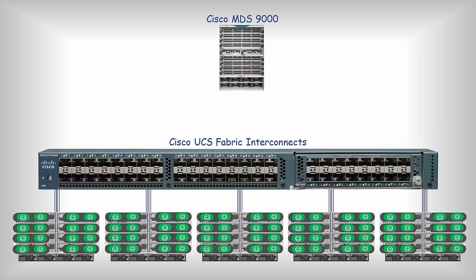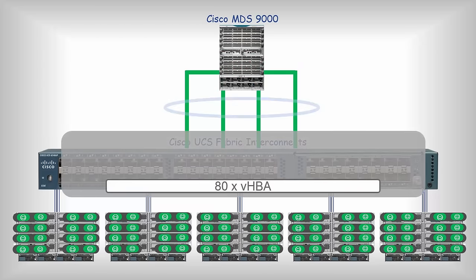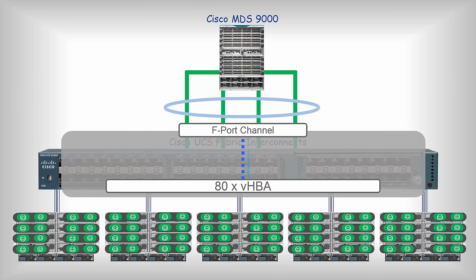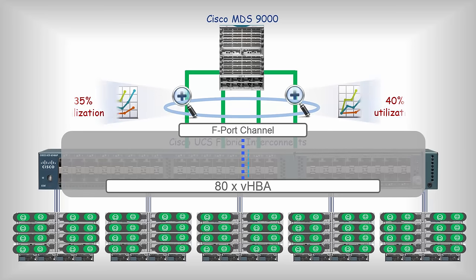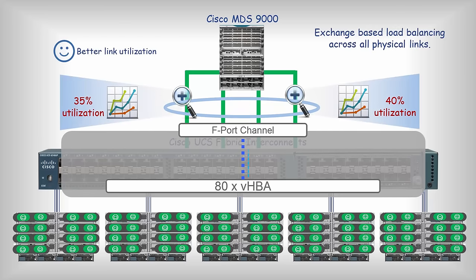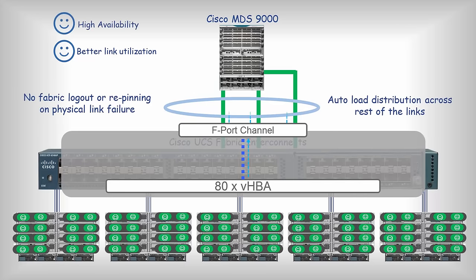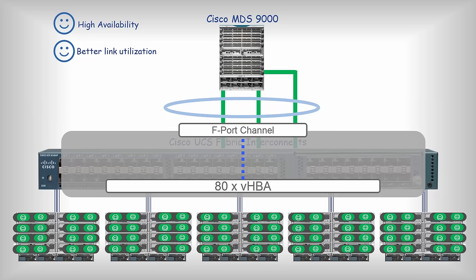With Cisco MDS switches, SAN uplinks from UCS Fabric Interconnects running in end-host mode can be aggregated into one single logical link. This is called F port channel. The vHBAs are pinned to the port channel, not to any single physical link. Link utilization gets better using exchange-based load balancing. If a few of the VMs are pumping too much traffic, they can use the aggregate bandwidth of four SAN uplinks. If one of the physical links fails, the VMs do not have to re-login to the fabric. The remaining links continue to keep the F port channel in up state. There is no traffic loss.